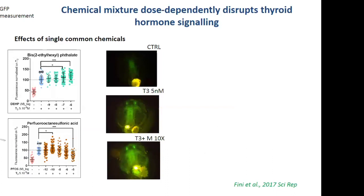We tested the 15 compounds alone at different concentrations, then tested the mixture. On the left part of the slide, you can see two of the 15 compounds — DEHP, a phthalate used to soften plastics in medical devices. We saw an increase of fluorescence when we added T3 into the water, as expected. We also saw more fluorescence when we put DEHP at one micromolar or 0.1 micromolar. Interestingly, when we tested perfluorooctane sulfonic acid (PFOS) and PFOA, we observed a non-monotonic dose response: a potentiation of thyroid hormone effect at 10⁻¹⁰ molar and a diminution at 10⁻⁵ molar.